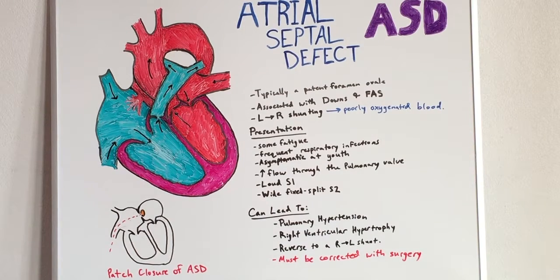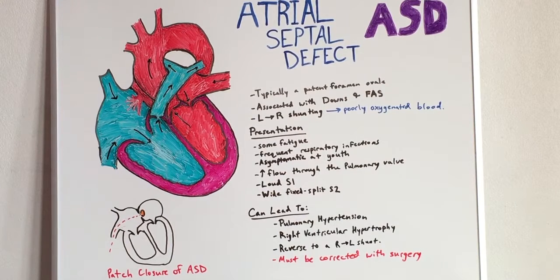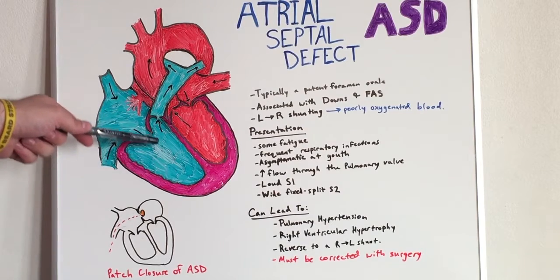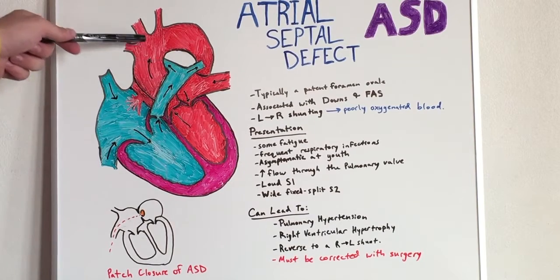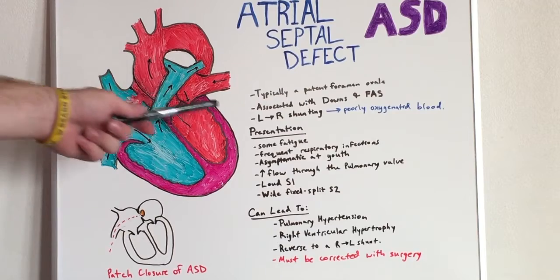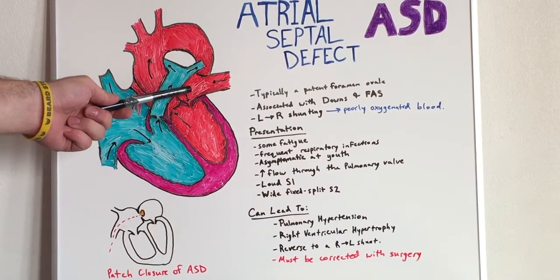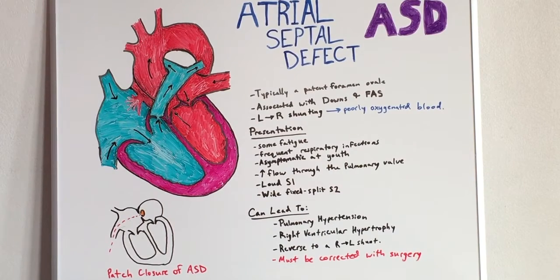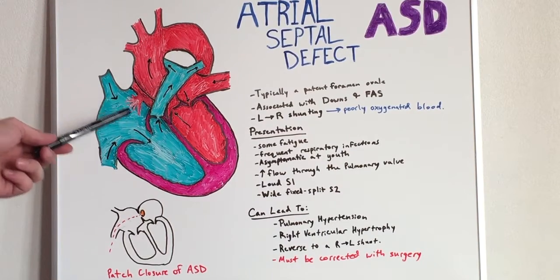Today's lecture is on atrial septal defect, or ASD. An atrial septal defect is a congenital heart defect in which blood flows between the atria of the heart. Typically, blood flows from the superior and inferior vena cava into the right atrium, right ventricle, into the pulmonary arteries, through the pulmonary circulation, back through the pulmonary veins to the left atrium, left ventricle, and into the aorta through systemic circulation.